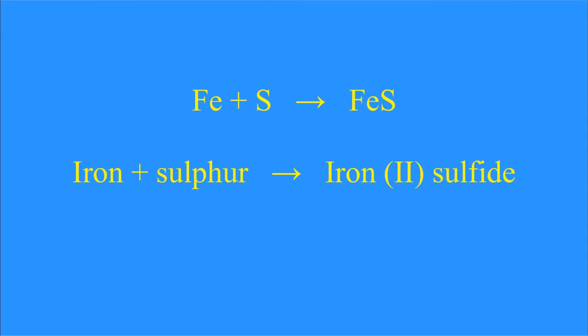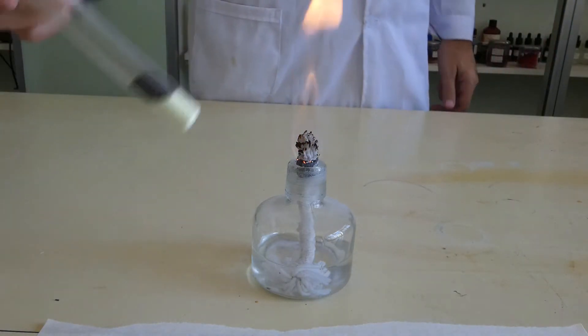The reaction that will take place is iron plus sulfur produces iron(II) sulfide. Heat the mixture.